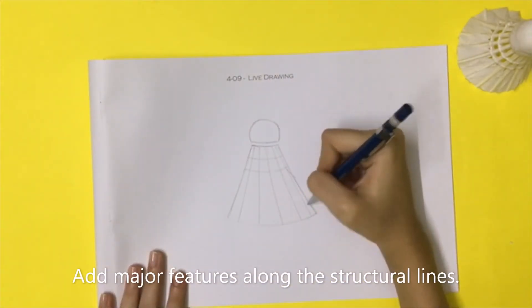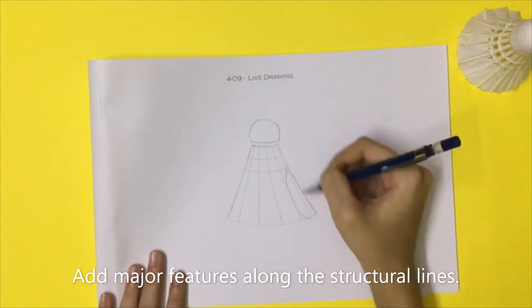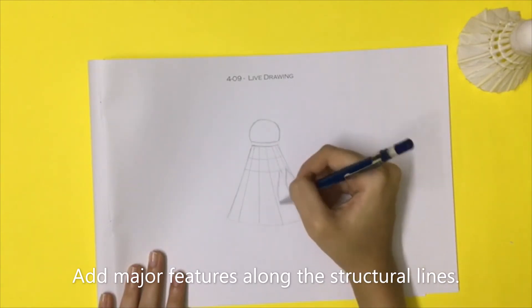Add major features along the structural lines. Here they are the feathers, the background feathers and the dark band.